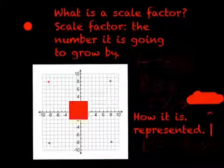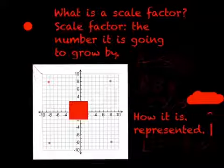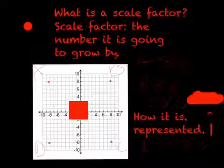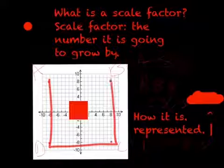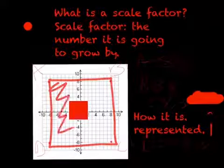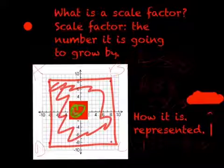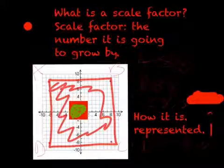So these are the vertices, which would be A prime, B prime, C prime, and D prime. So now if we fill it in, we can see it's much bigger than this square right here. So this is dilating the figure by a different number.